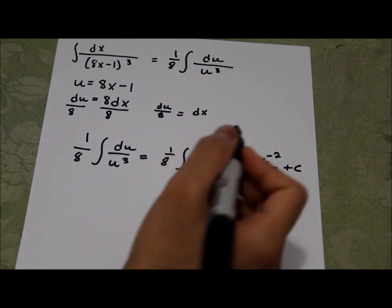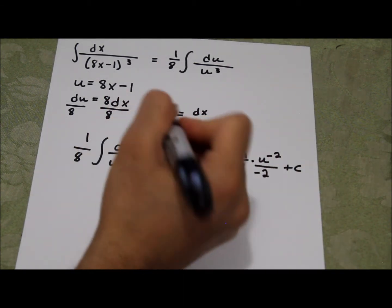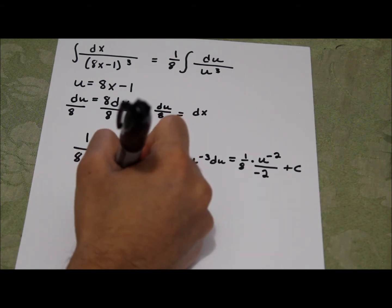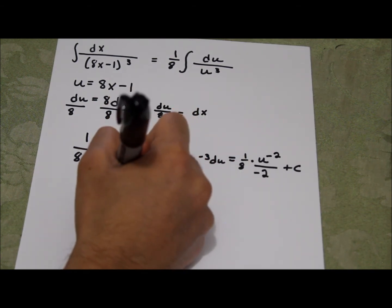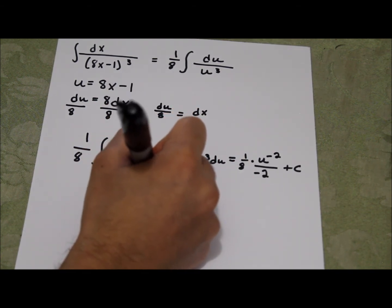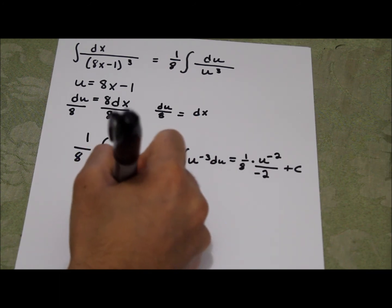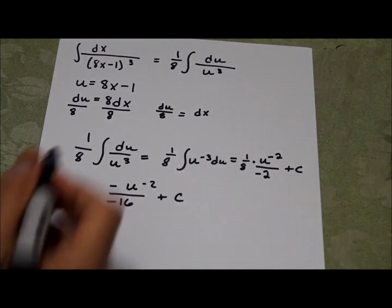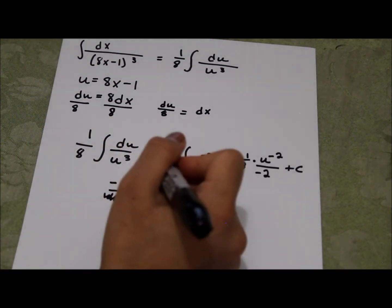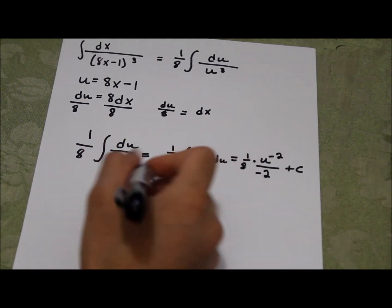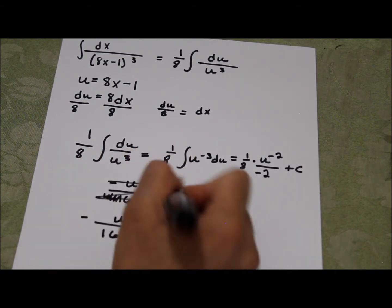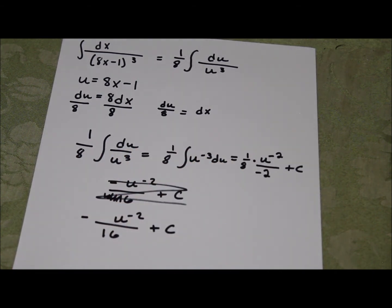And if I rewrite it, I get negative u to the negative 2 over negative 16 plus c. No, it's just u to the negative 2 divided by 16, and that's negative plus c. And now I'm not done here yet.